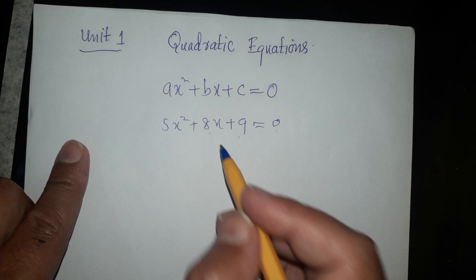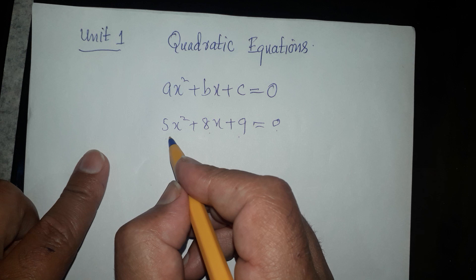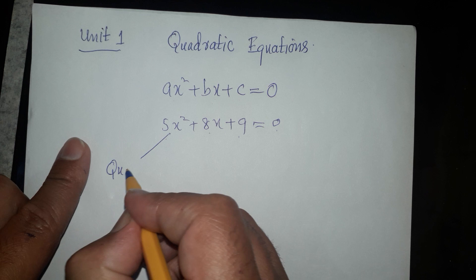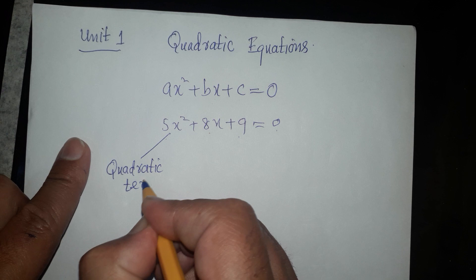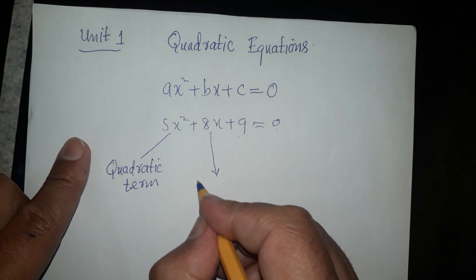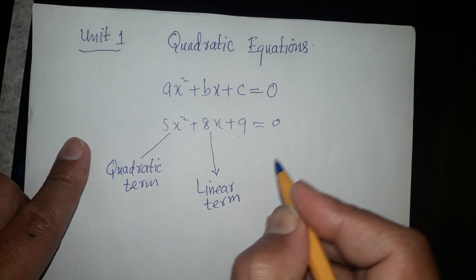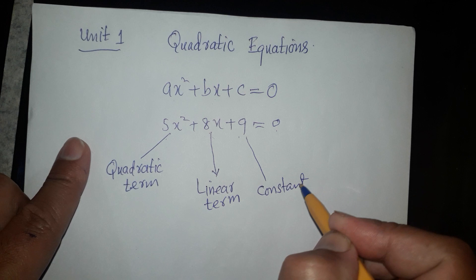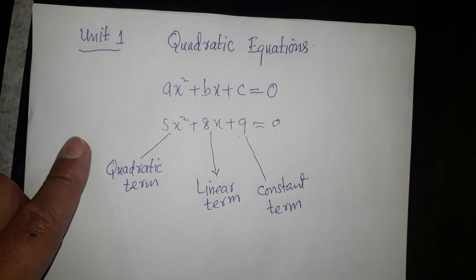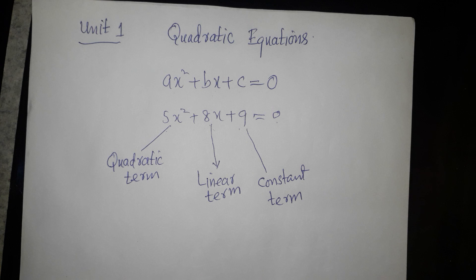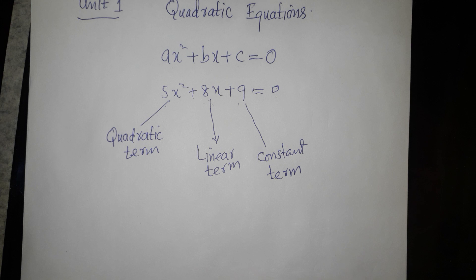In the standard form, the first term is the quadratic term, the second term is the linear term, and the third term is the constant.